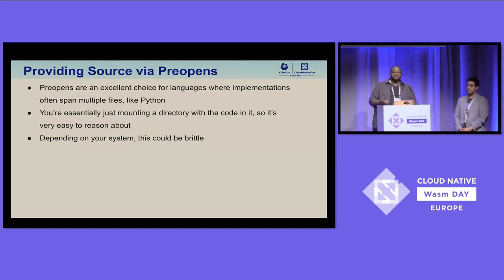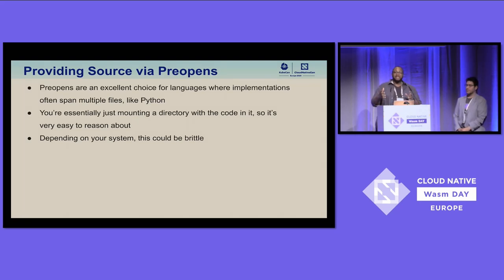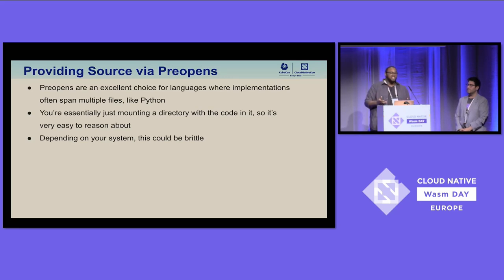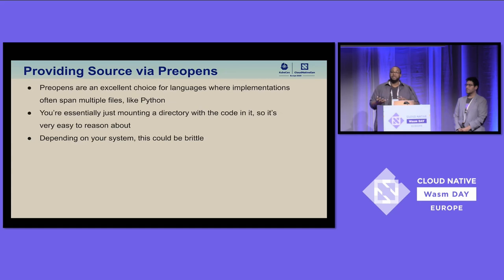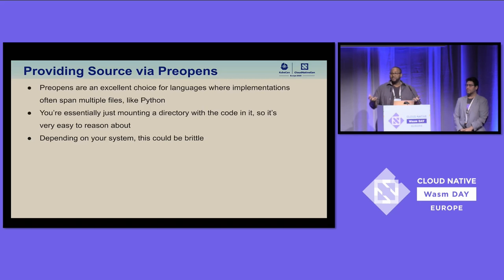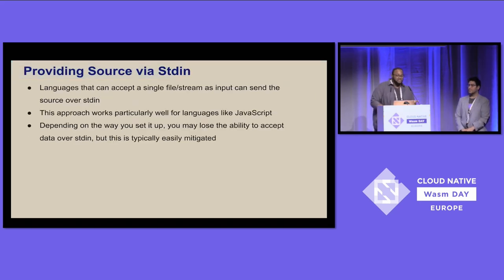The preopen approach can be a little brittle. Unlike running a compiled Rust module where you only need that one module, here you have to make sure you have the WASM file ready and the user's source code somewhere you can preopen it. Depending on how you architect your system, that could be fragile. At Suborbital, we just bundle all the code in with the interpreter itself as one WASM module, and it's not a problem.